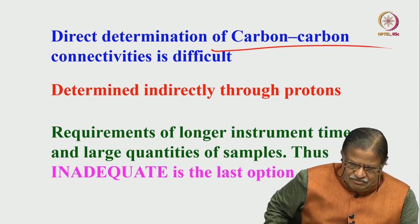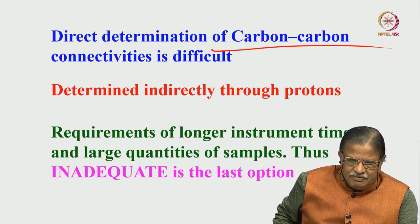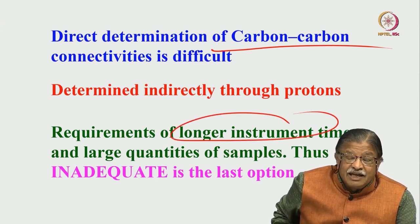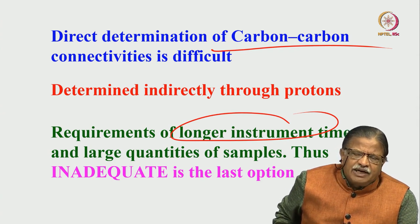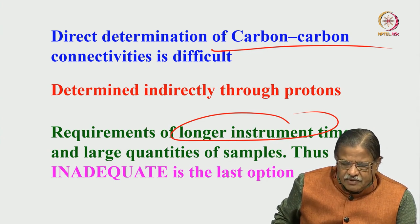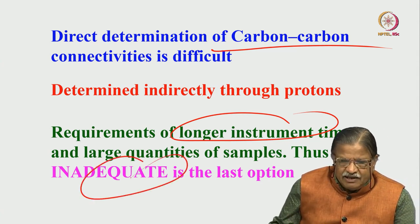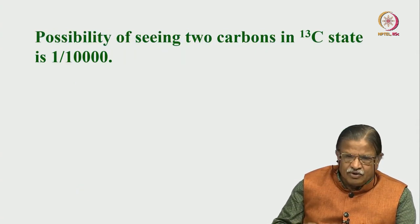One problem with the 2D INADEQUATE experiment is that it requires longer instrument time, because we are detecting carbon-13 to carbon-13 correlation. In addition, you require an enormous quantity of sample. So this is a very difficult task. If I have to do it, the only option left is INADEQUATE — it is the last option. When you do that experiment, we can establish correlation between two dilute spins.